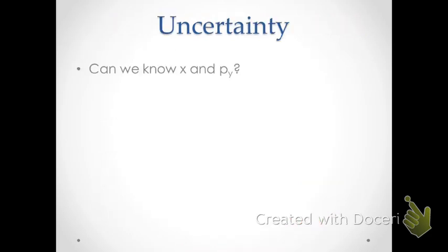We just looked at the relationship between position x and momentum in the x-direction. What about position x and momentum in the y-direction? Do we have a similar limitation? To determine this, we need to evaluate the commutator of x and p-hat-y to determine whether that's equal to zero or not. That will be left as an exercise in class. The question is: I know I can't know x and px at the same time, but can I know x and p-sub-y, the momentum in the y-direction, at the same time?